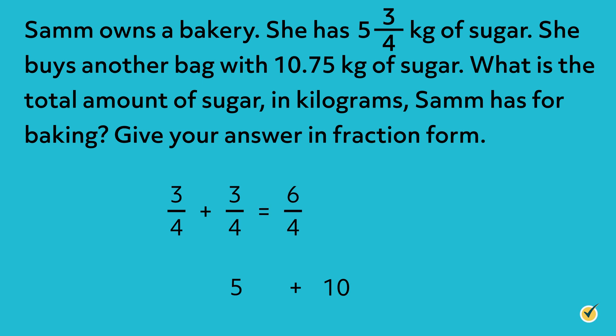That gives us 6 fourths because we add our numerators and our denominator stays the same. Now if you notice, we have an improper fraction, so let's convert that to a mixed number. If we divide the numerator by the denominator, we'll get 1 and 2 fourths, which can be simplified to 1 and 1 half.